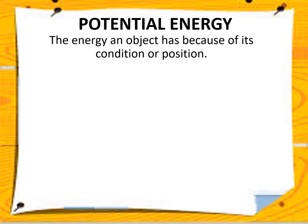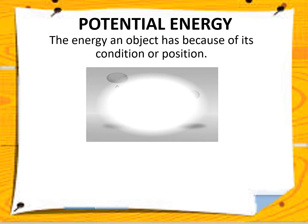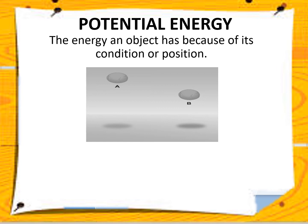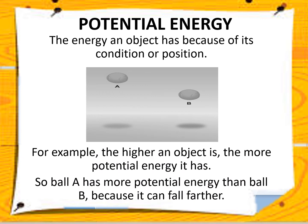This is potential energy. When we say potential energy, this is the energy of an object because of its condition or position. Looking at the diagram with ball A and ball B, ball A is higher compared to ball B. The higher the object, the more potential energy it has. Since A is higher than ball B, ball A has more potential energy than ball B.